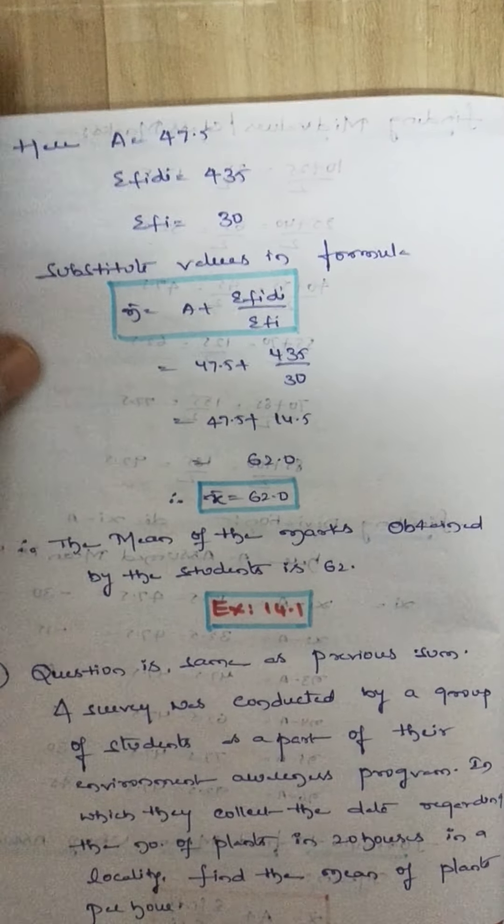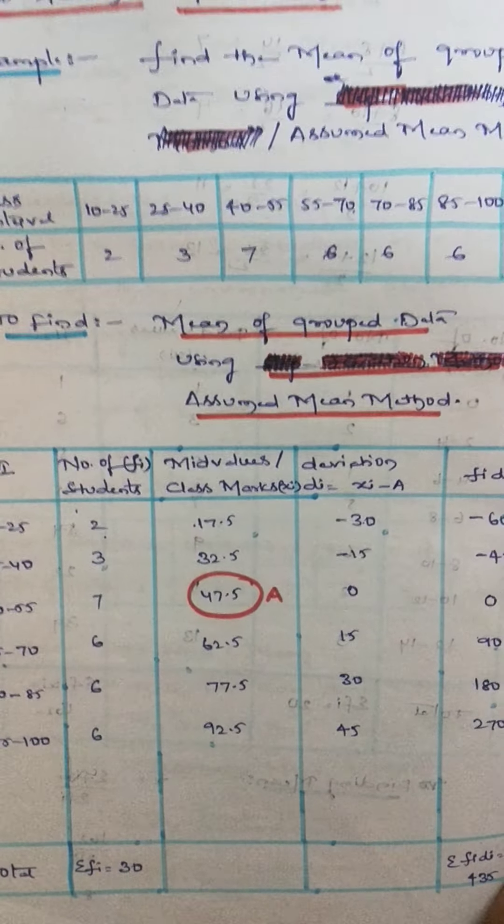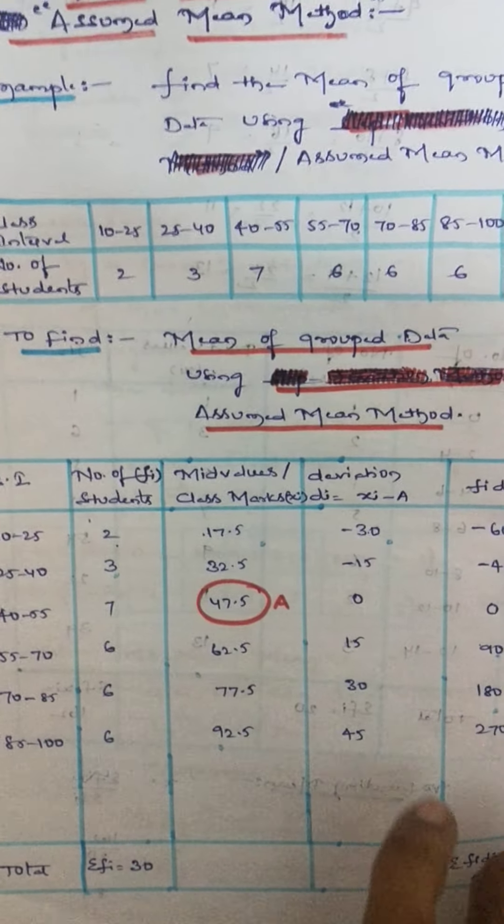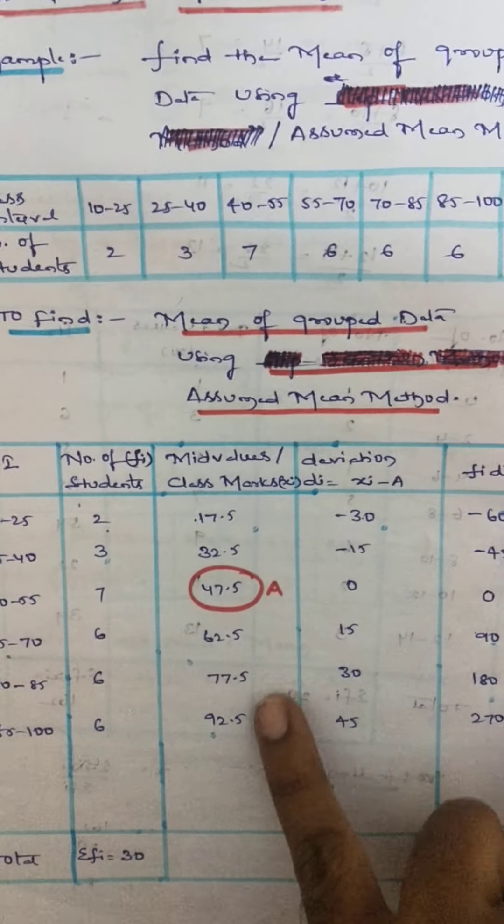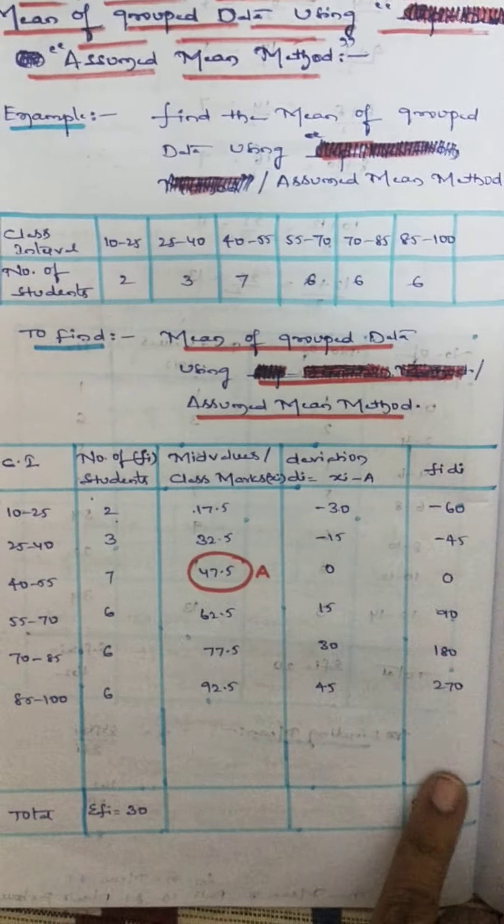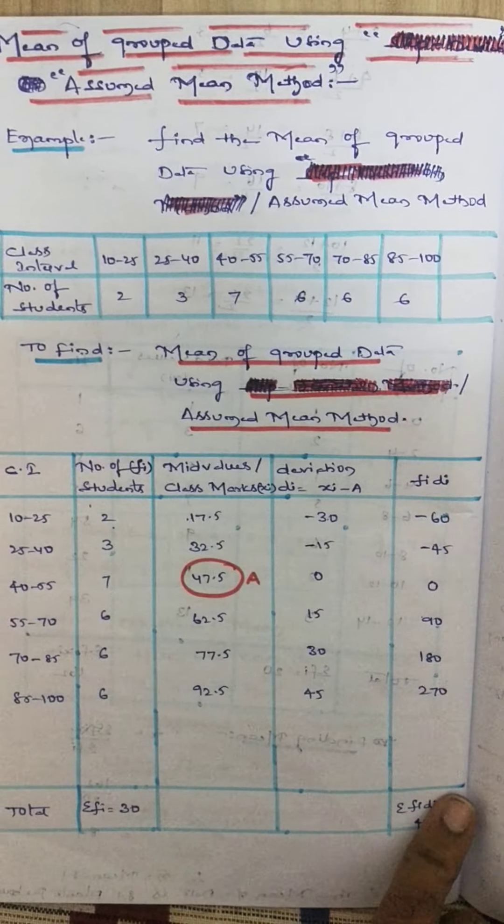My suggestion is, here I have taken 47.5 as assumed mean. So better you solve for other values. Take any one as A and try whether you are getting the same result or not.